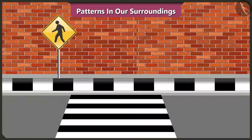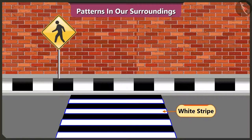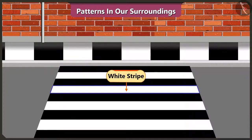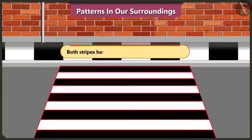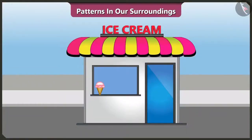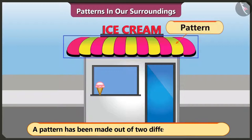Oh yes, this zebra crossing has a pattern of black and white stripes. Yes, this pattern has black, white, black, white lines. Both black and white color lines have been used repeatedly. Now look at the roof of this ice cream shop. Does it have a pattern? Yes, here two different color stripes have been used to make a pattern.